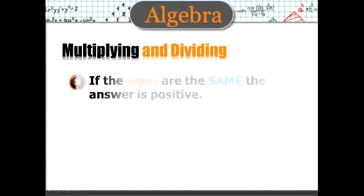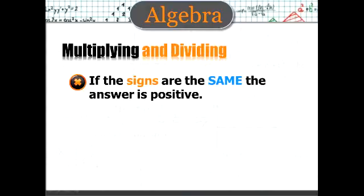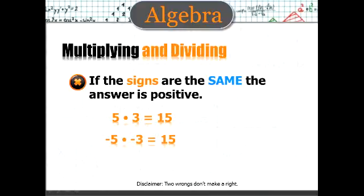Multiplying and dividing. If the signs are the same, the answer is positive. Examples, 5 times 3 is 15. And negative 5 times negative 3 is still 15.